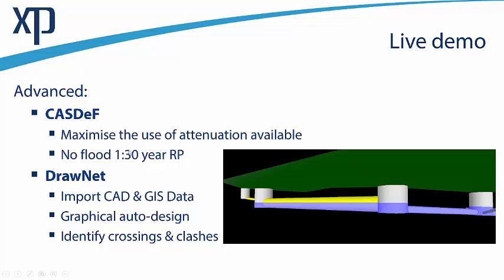I'm going to emphasize this because I'm fully aware that a lot of people are not fully utilizing the software, particularly in terms of the CASDEF module. I'll then take a look at the DrawNet module, because within the advanced bundle we also provide a graphical interface. This will enable you to import CAD or GIS drawings into microdrainage, and we could even embed it within full AutoCAD or Civil 3D and provide this graphical auto-design process, which is so much quicker and easier. You can also identify crossings and clashes between stormwater and foul water networks or utilities within the design.